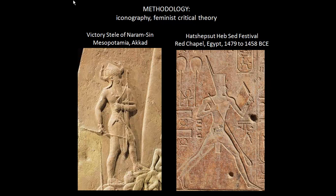Hatshepsut's headdress is different but also conveys power. This is the headdress of Lower Egypt — a swirly element coming out of a square-like headpiece, meant to represent a cobra coiling out of a basket. It represents the power of the pharaoh, like the deadly strike of a cobra. Lower Egypt is one of the two regions — Upper and Lower Egypt — with which pharaonic history begins. This headdress shows that Hatshepsut rules over Lower Egypt.